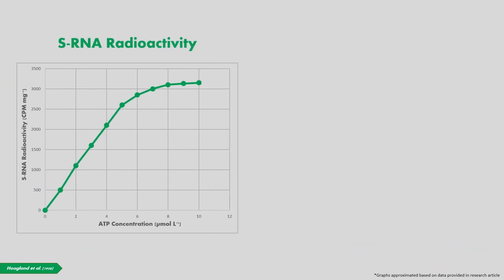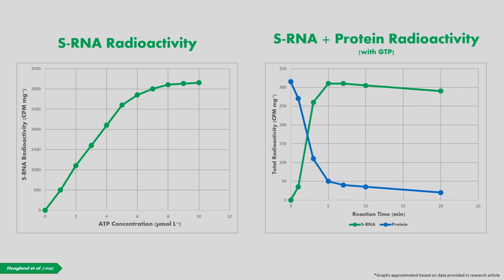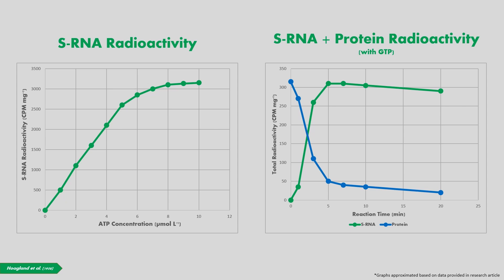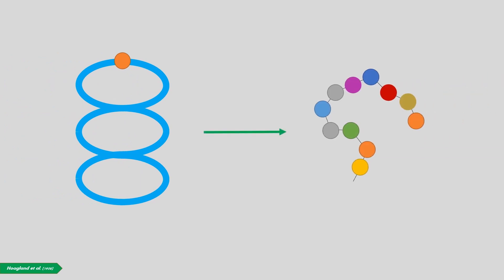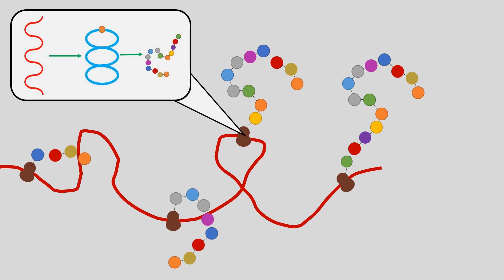Firstly, the more ATP present in a solution containing carbon-14 amino acids, the more radioactive the sRNA would become. And secondly, this radioactivity would be transferred to protein again in the presence of GTP. From this data, they concluded that amino acids move from sRNA to protein, and that GTP is required for this to occur. This unprecedented discovery suggested that there was a whole step in the RNA translation process that scientists collectively had previously not accounted for.